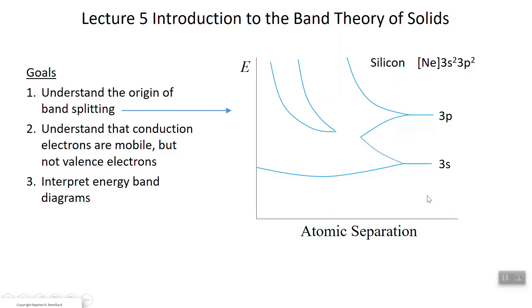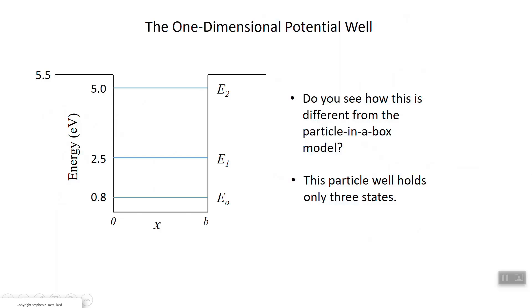I want to start off by reviewing a problem from quantum mechanics called the one-dimensional potential well. It's similar to something you may have seen, the particle in a box. The one-dimensional potential well is mathematically a messier proposition, but it comes out to have very similar properties. You have a graph of potential energy versus position here. Potential energy of what? Of an electron, for example.